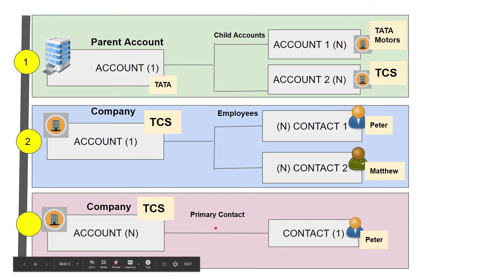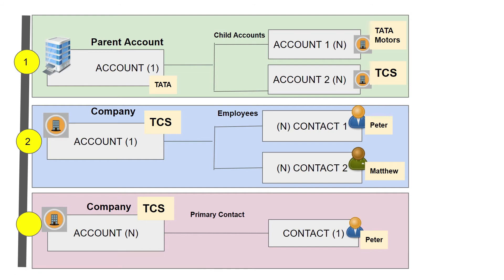So these three relationships exist in Dynamics 365. First: a 1:N self-referential relationship within account and account (parent-child hierarchy). Second: a 1:N relationship between account and contact, where one account has multiple employee contacts. Third: an N:1 relationship where one contact is the primary contact for multiple accounts. Now we will see the demo.